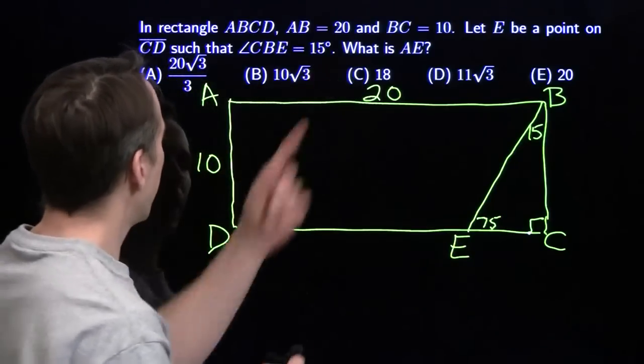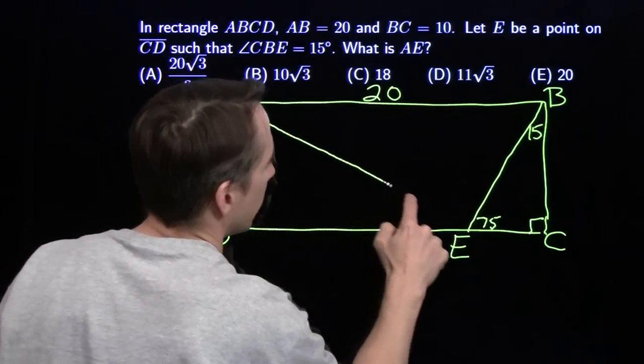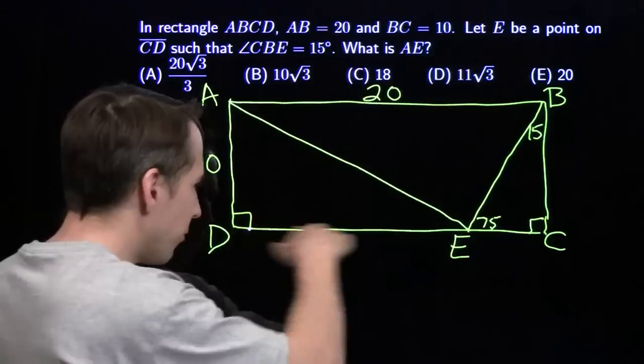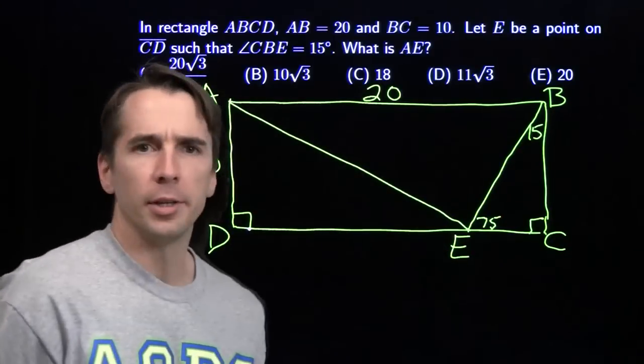And we're looking for AE. Now, this is at least a right triangle. I've got a right triangle over here, so if I can figure out what ED is, we can break out Pythagorean Theorem.